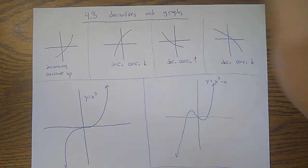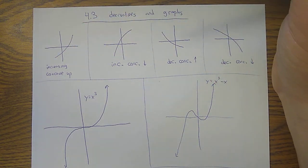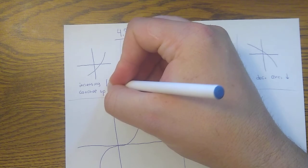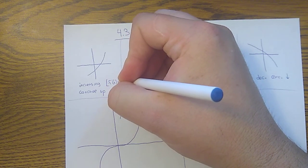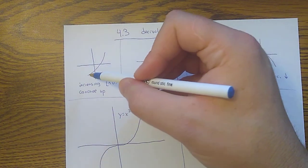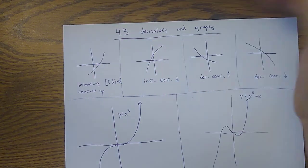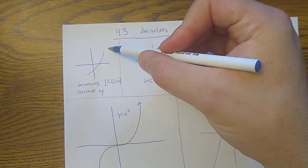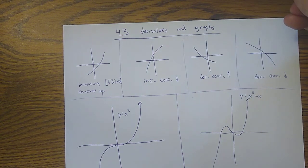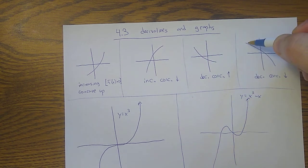By now we know what the derivative has to do with increasing and decreasing. Increasing means the first derivative is positive, and visually that means if you look at the graph and move your eyes from left to right, you're moving up — it goes up and to the right. Decreasing is moving down and to the right.